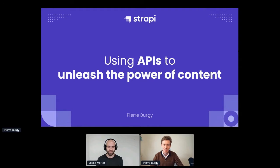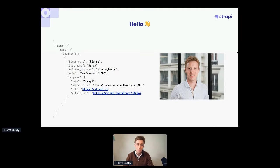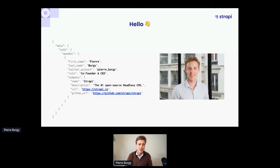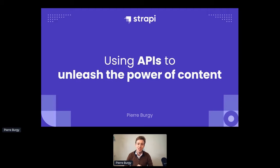Thanks a lot for the introduction. I'm the co-founder and CEO of Strapi, which is the leading open source headless CMS. I've been a developer, I use a lot of APIs, and I especially used a lot of traditional CMSs because I worked as a freelance developer with my two co-founders. When we had to build a mobile application or a website using modern technologies, there was one thing missing — an API. That's the very goal of this talk: to explain how APIs can actually unleash the power of content.